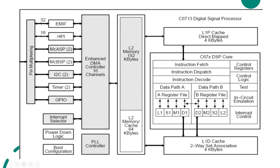The DSP processor has 8 functional units. There are 8 functional units in total. There are 2 separate data paths — data path A and data path B. There are 2 register files: register file A and register file B. Each register file has 16 registers, and each register is 32 bits.